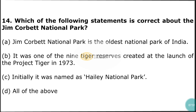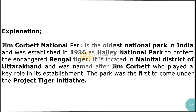Question number 14: Which of the following statements is correct about Jim Corbett National Park? The correct answer is option D — all of the above. Jim Corbett National Park is the oldest national park of India. It was one of the nine tiger reserves created at the launch of Project Tiger in 1973. Initially it was named Hailey National Park. It was established in 1936 to protect the endangered Bengal tiger, located in Nainital District of Uttarakhand, and was named after Jim Corbett who played a key role in its establishment.